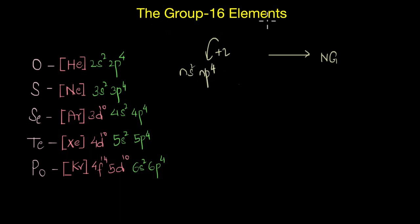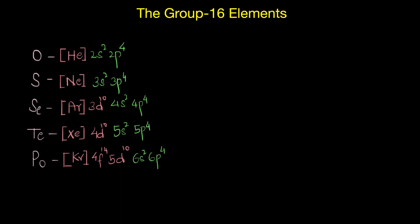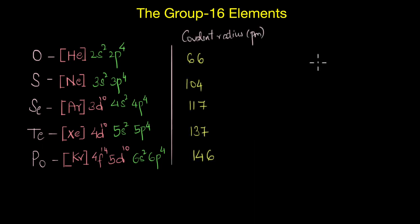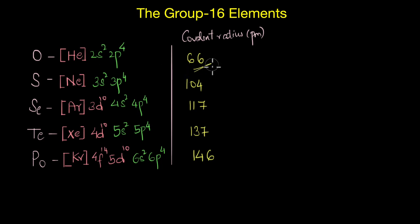As we have seen in all the previous cases, the atomic radius or covalent radius of these elements also increases as we go down the group — oxygen has an exceptionally small size. Similarly, their ionization enthalpy values and electronegativity values also decrease as we go down the group with increase in atomic size.